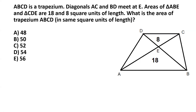To solve this, we start with the basic definition: a trapezium is a quadrilateral where two sides — in this case AB and CD — are parallel to each other. The area of trapezium ABCD can be written as the sum of the areas of triangle ABD and triangle CBD.